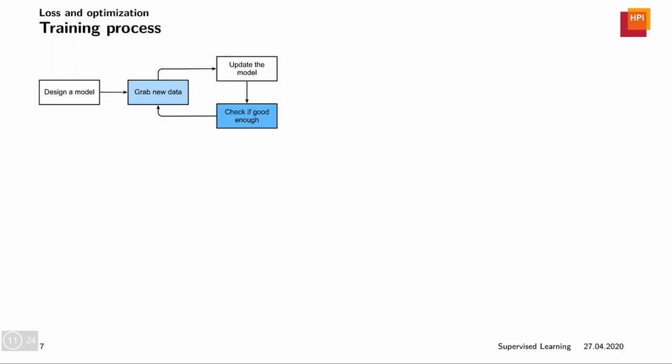In principle we can actually do this iteratively. So let's say we have designed our model which encodes our assumptions on the data. We get a training dataset. We use the training dataset to adjust the model parameters. Then we could basically go and see whether this model is good enough. If it is good enough then we're done. However, if it isn't we can go back and request more data and use it to update the model, and so on and so forth, until we think it is good enough.